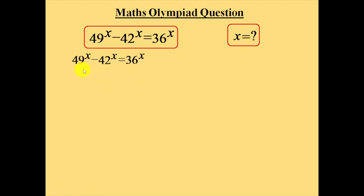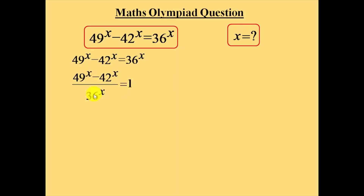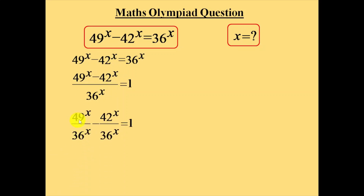First, in this equation, bring this 36 power x to the left side. When it comes to this side, it will become a denominator. So, 49 power x minus 42 power x divided by 36 power x is equal to 1. Now, separate this denominator to each numerator: 49 power x over 36 power x, minus 42 power x over 36 power x.